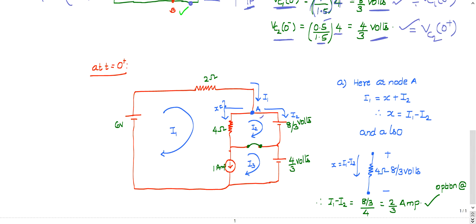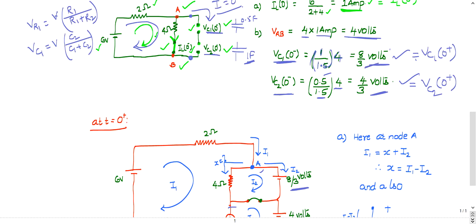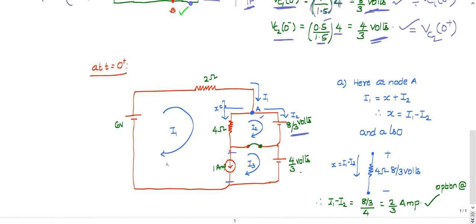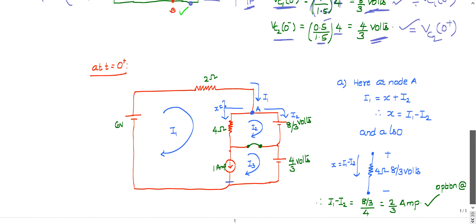At t equal to 0 plus, the inductor is replaced with a current source of 1 ampere in the downward direction, since I_L(0-) = 1 ampere. VC1 is replaced with a voltage source of 8/3 volts, and VC2 is replaced with a voltage source of 4/3 volts. I follow the same directions for I1, I2, and I3 as given in the question.